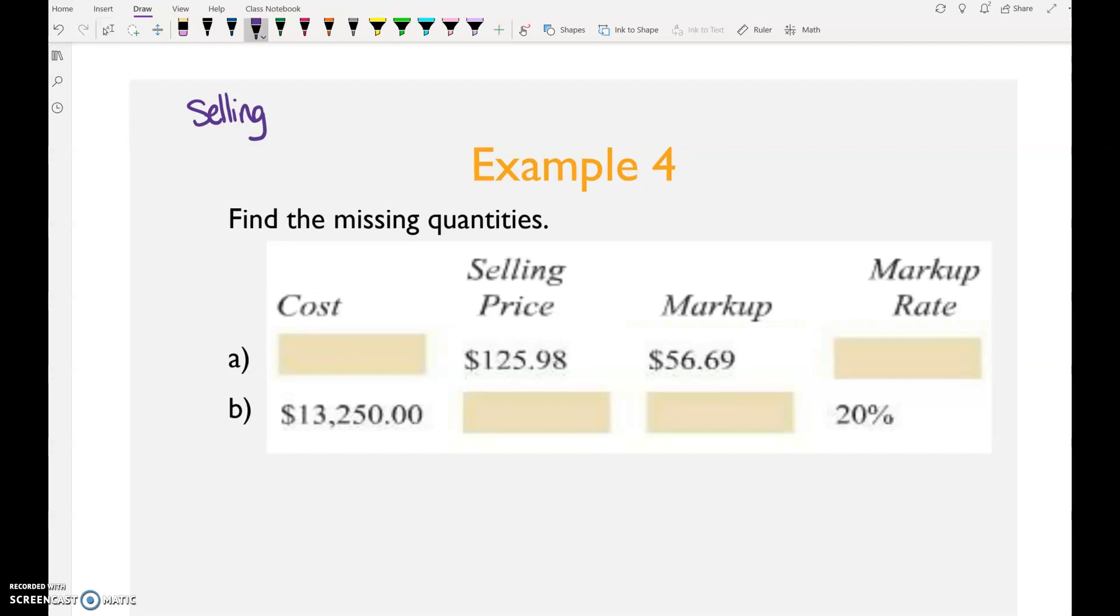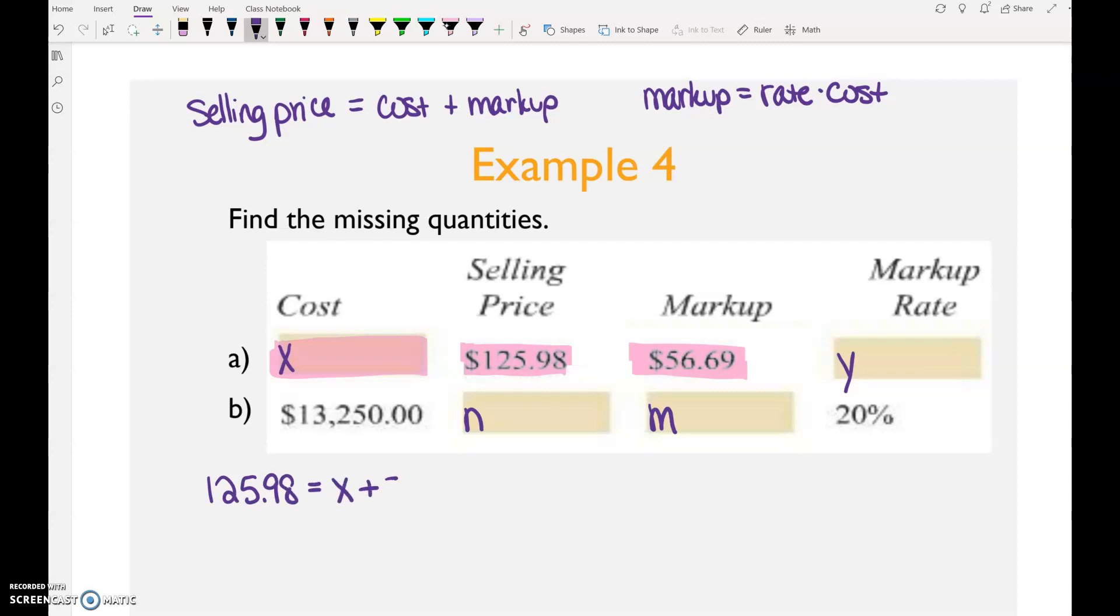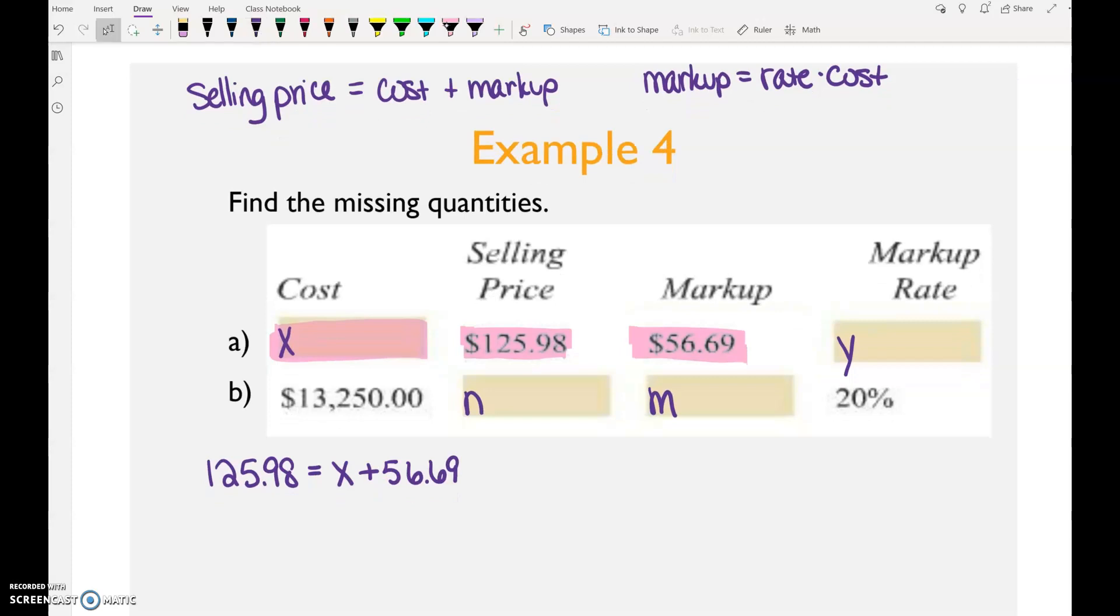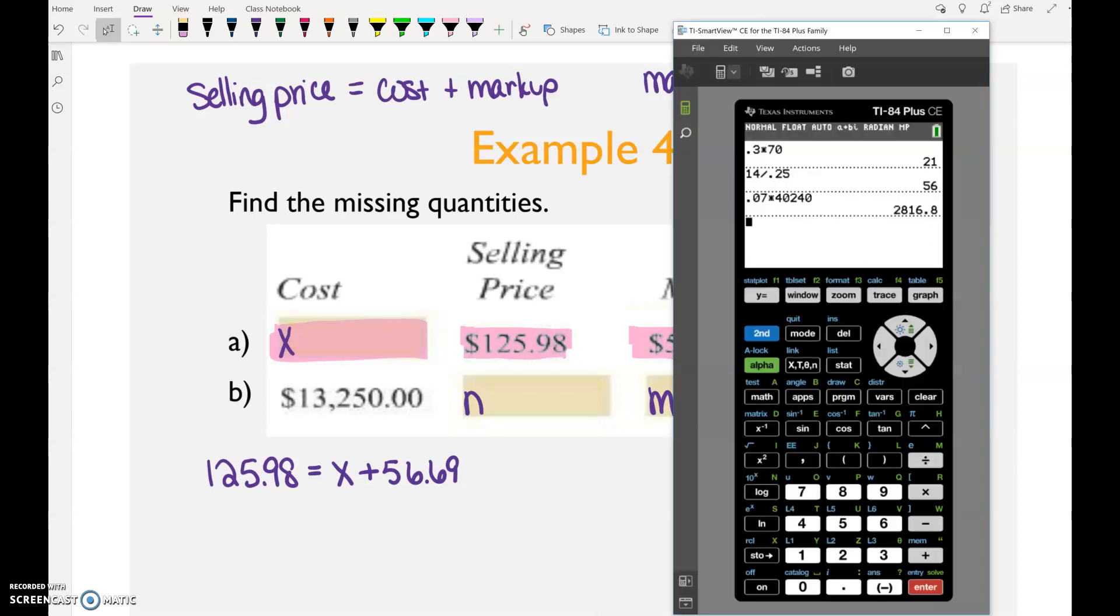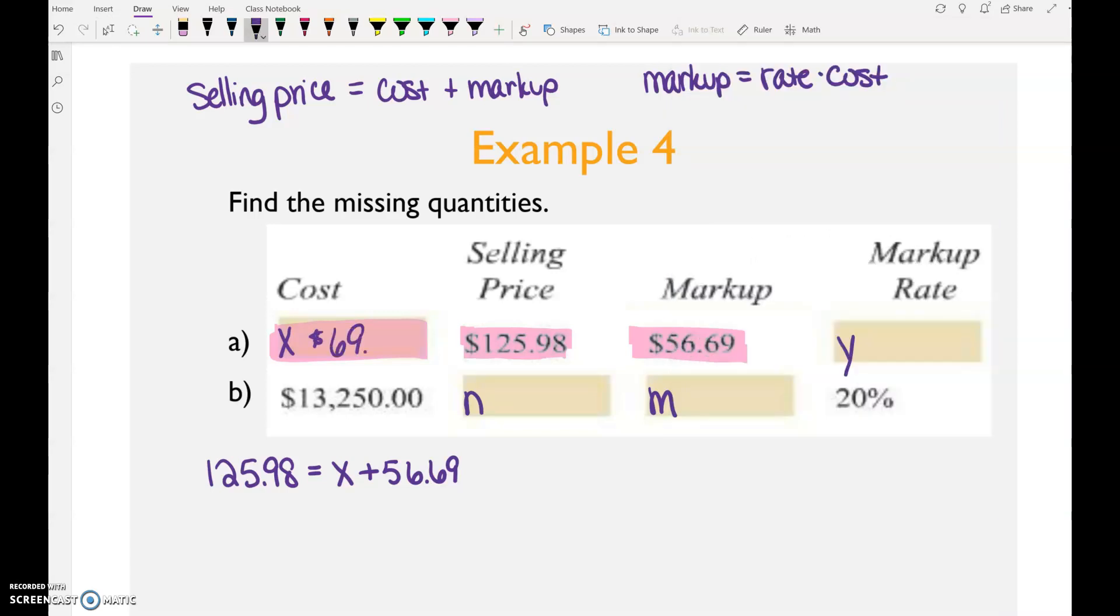But we need to figure out how to fill in all of these missing holes. So I'm going to name this one x, this one y, this one n, and this one m, and we'll figure out how to complete this table. First, let's look at x, cost. The first formula that I see cost in is selling price equals cost plus markup. So I've got selling price, I've got markup, cost is the only thing I don't have. So selling price 125.98 equals the cost, which we don't know, plus the markup of 56.69. How would we figure out what the cost is? Subtract. So we grab our handy dandy calculator, 125.98 minus 56.69, 69.29. The cost is 69.29.